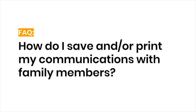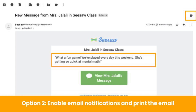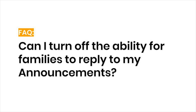Some teachers ask: how do I save or print my communication with families as required by my school? Here are two workarounds. The first is to screenshot the message in Seesaw. The second workaround is to enable email notifications in account settings — you'll receive an email with the message and any attachments a family member sends, and you can click the print icon to save or print the email. We always recommend keeping pathways for two-way communication open, but if you need to turn off family replies for any reason, you can do so in class settings.